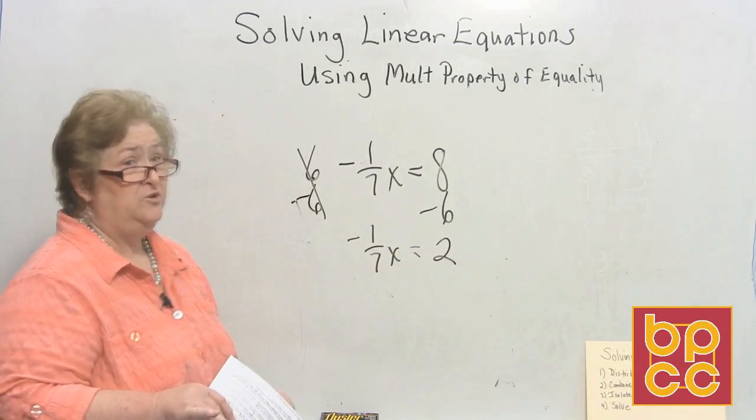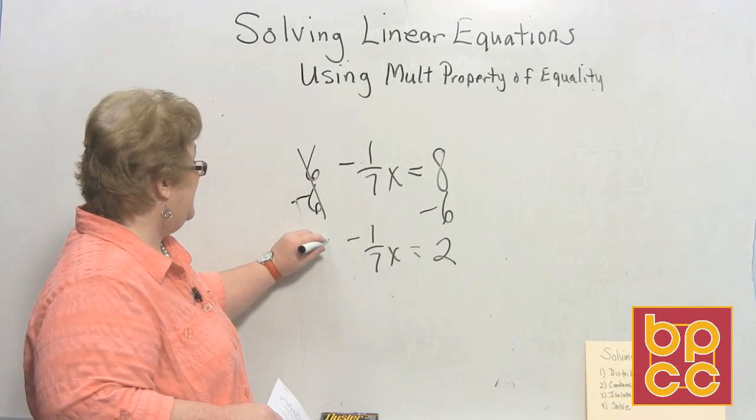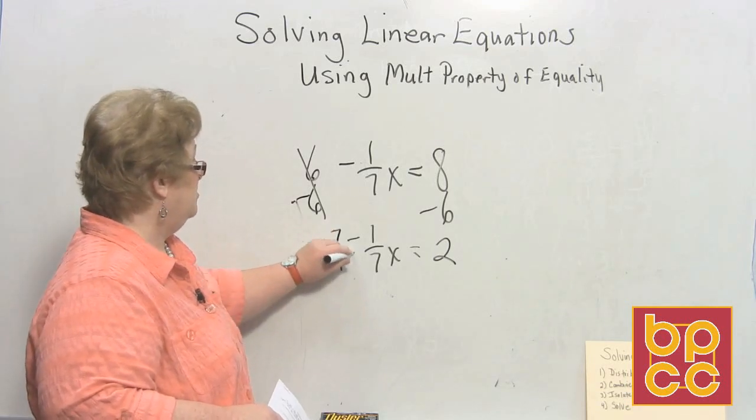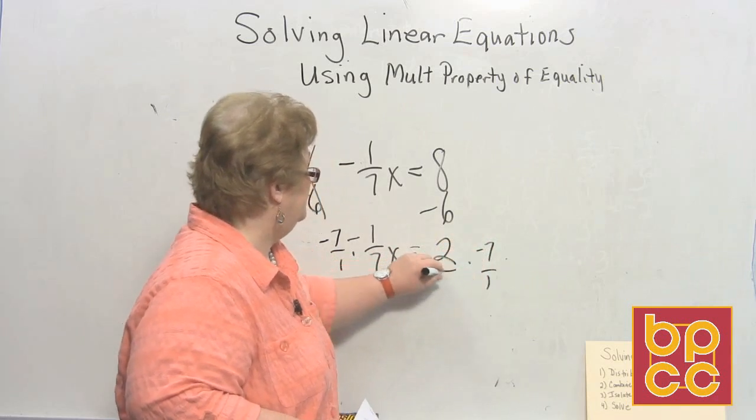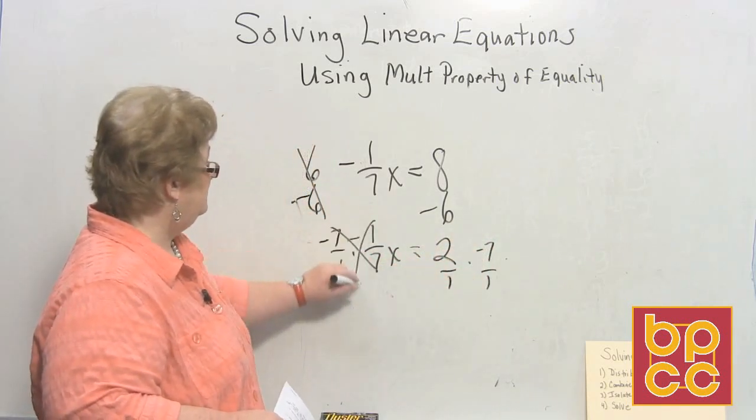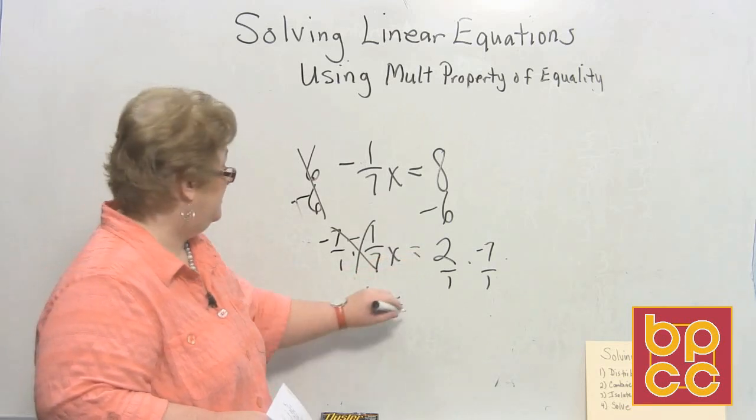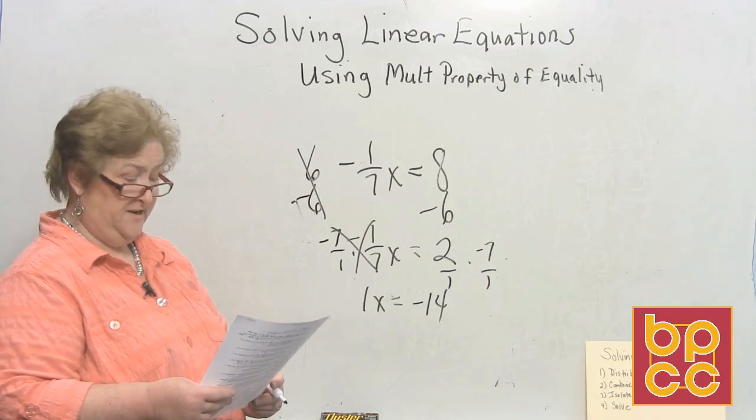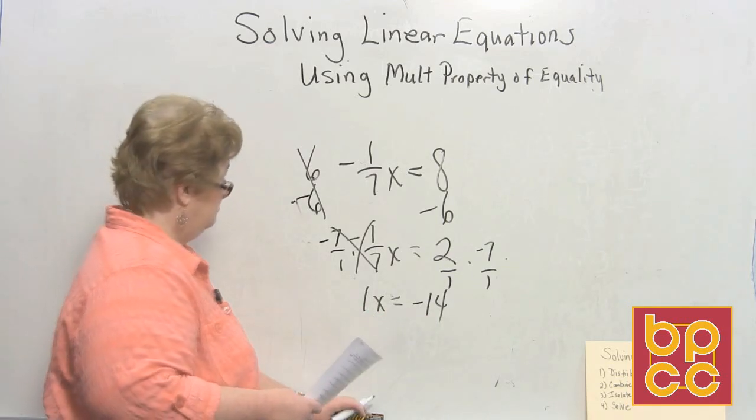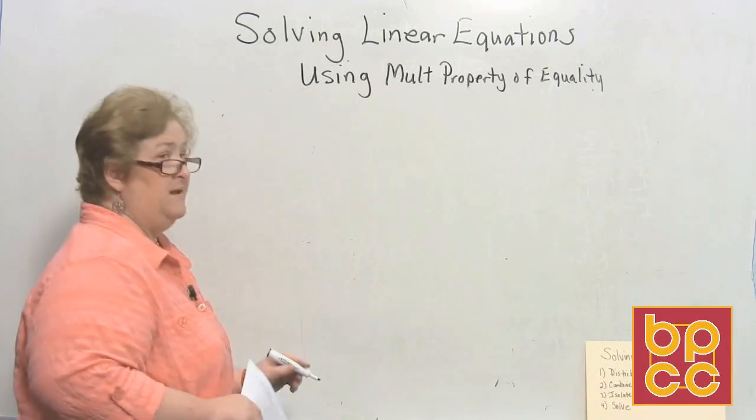Now sometimes people forget. When you do the reciprocal, you've got to keep the sign of the fraction. So let's multiply by a negative 7 over 1 and a negative 7 over 1. So this clears out to 1x and 2 times a negative 7 is a negative 14. 1x equals a negative 14. That looks good.